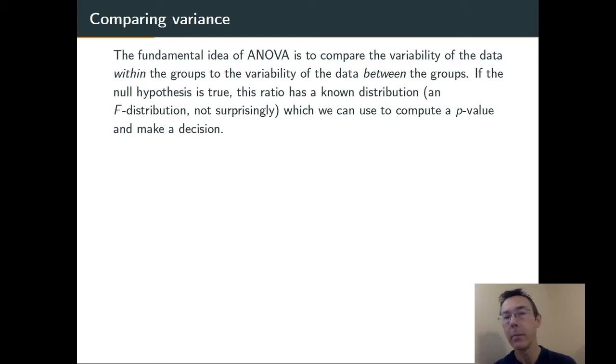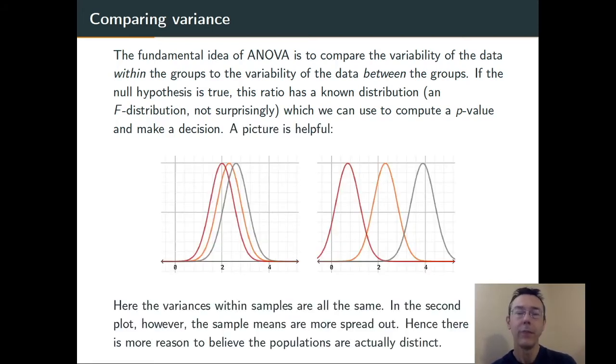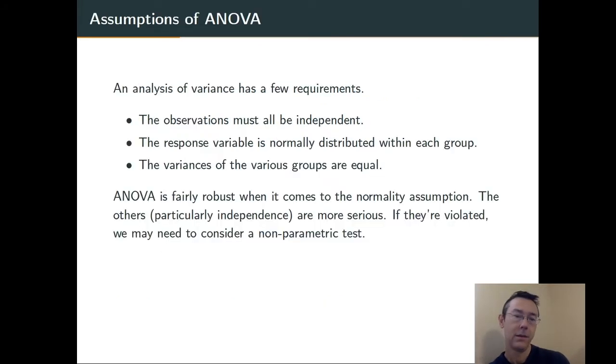Basic idea, we're going to compare the variability within the groups to the variability between the groups. The idea is that if the variability between the groups is large in comparison to the variability within the groups, as shown here on the right, we're going to have better evidence against the null hypothesis. Magically, when we construct the variability between the groups and the variability within the groups appropriately, the ratio has an F distribution. We have the ability to compute in that distribution fairly easily. We'll be able to compute p-values and make decisions.